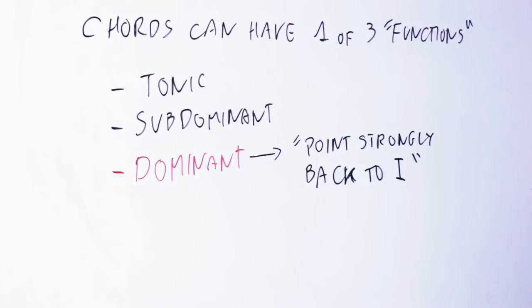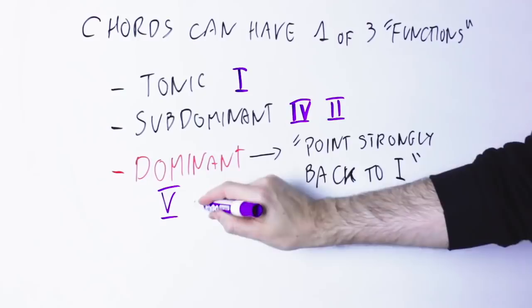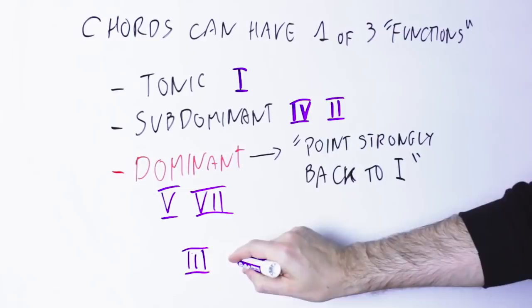Not only are the definitions controversial, but there is no universal agreement either on what chords have tonic function, what chords have subdominant function, and what chords have dominant function. Again, by and large there is an agreement that, for instance, the first chord has tonic function, the fourth and second chord have subdominant function, and the fifth and the seventh chord have dominant function.